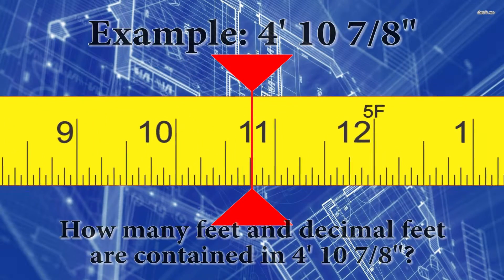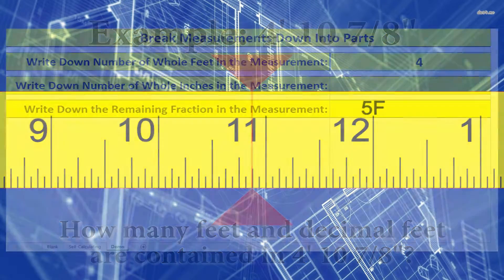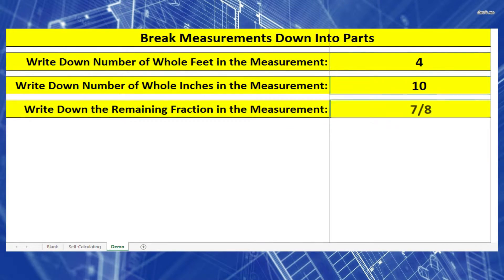In this example we're going to have 4 foot 10 and 7 eighths of an inch. We need to convert this to feet and decimal feet. So let's write out our feet, inches and fractions of an inch separately on the piece of paper.